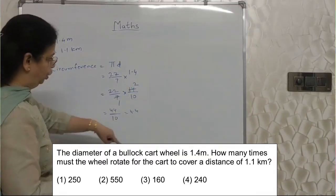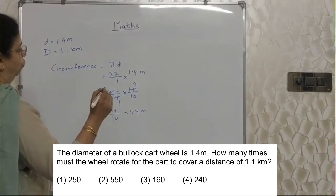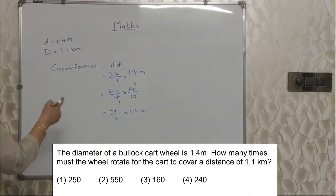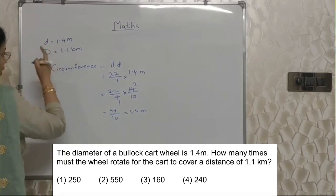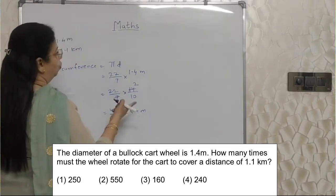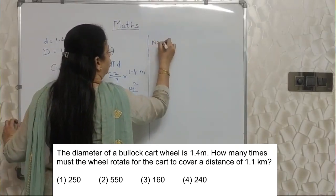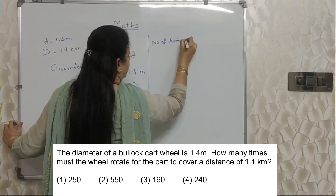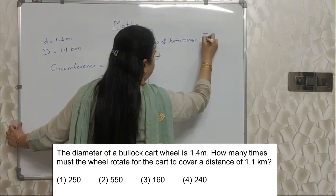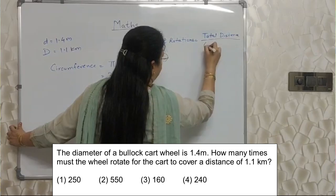This was in metres. So obviously the answer will be in metres. So 4.4 metres is one rotation. But we need to find out how many rotations are needed to cover 1.1 kilometres. So if we divide the total distance of 1.1 kilometres by the circumference, we will get the number of rotations. The formula is: number of rotations equals total distance upon circumference.